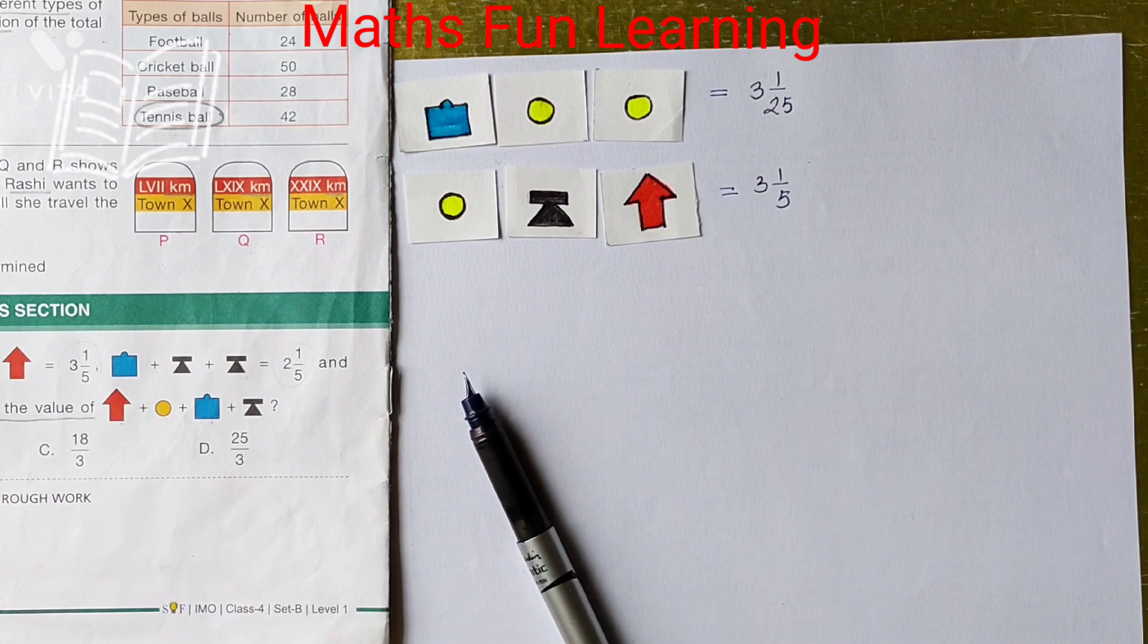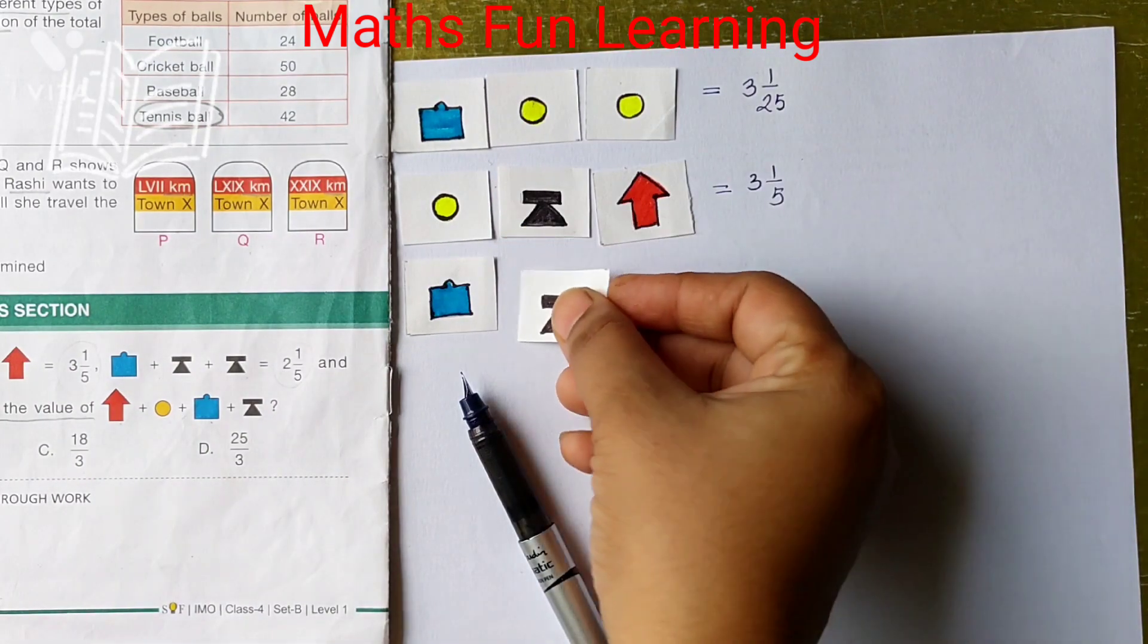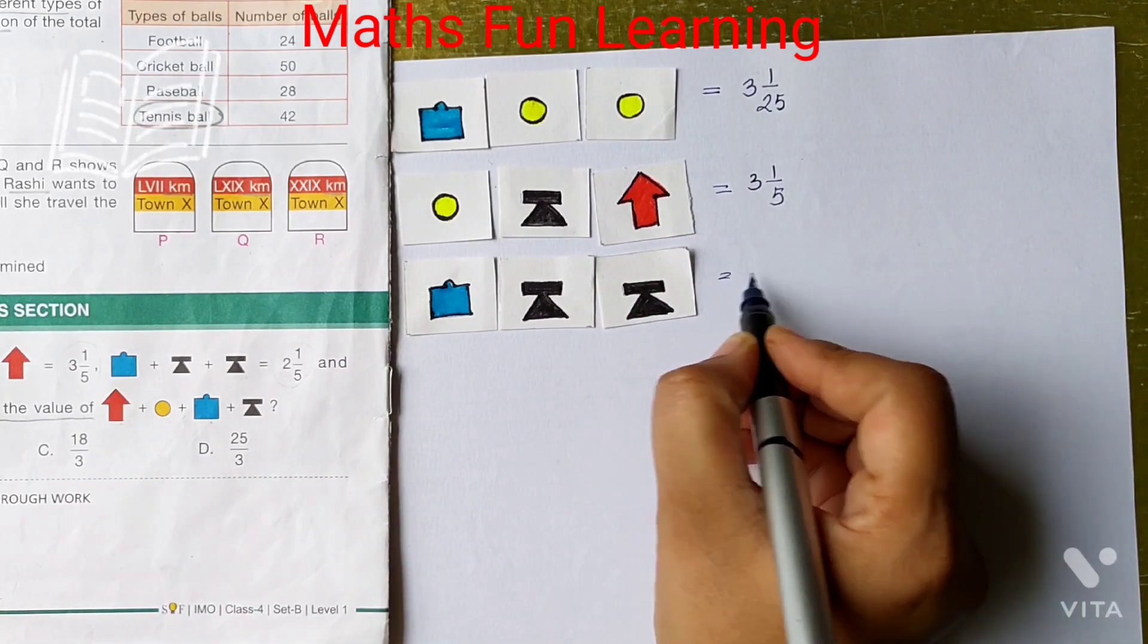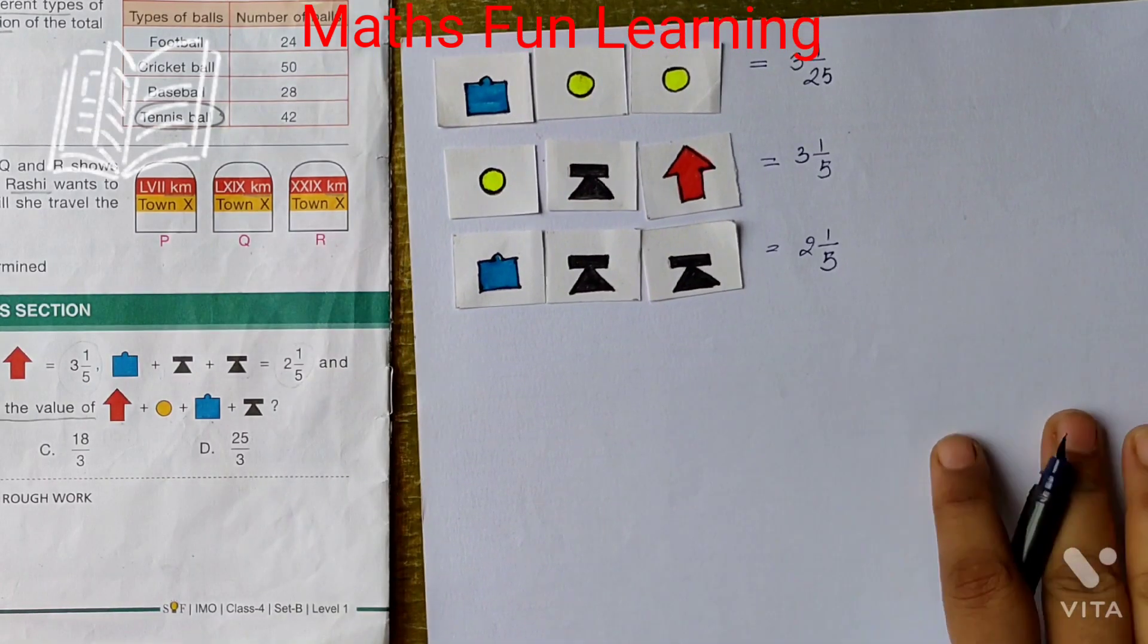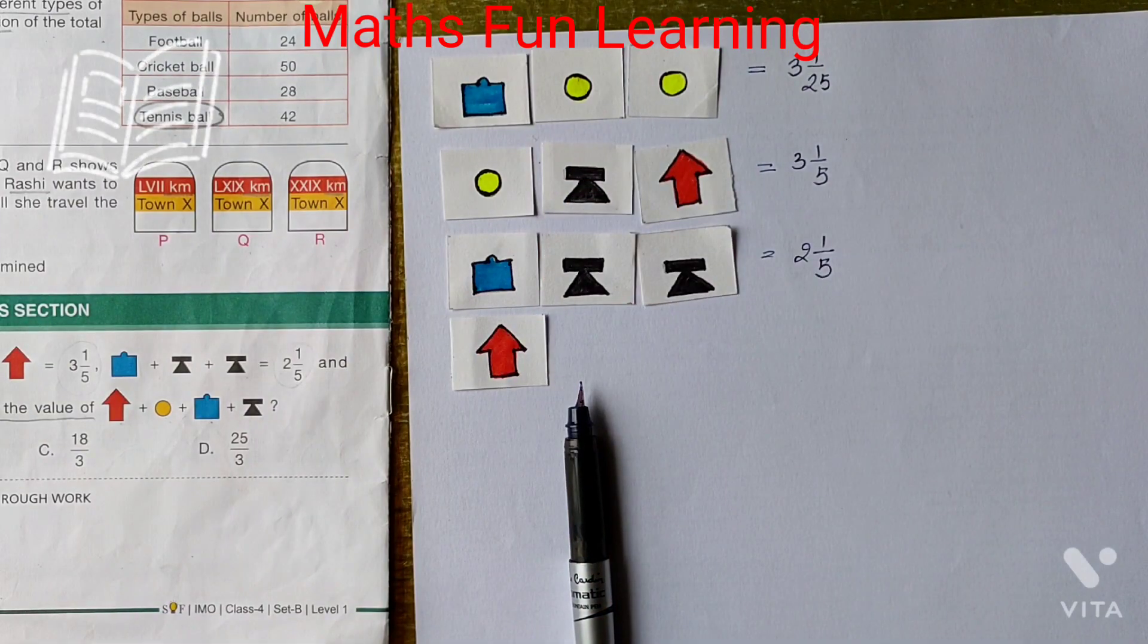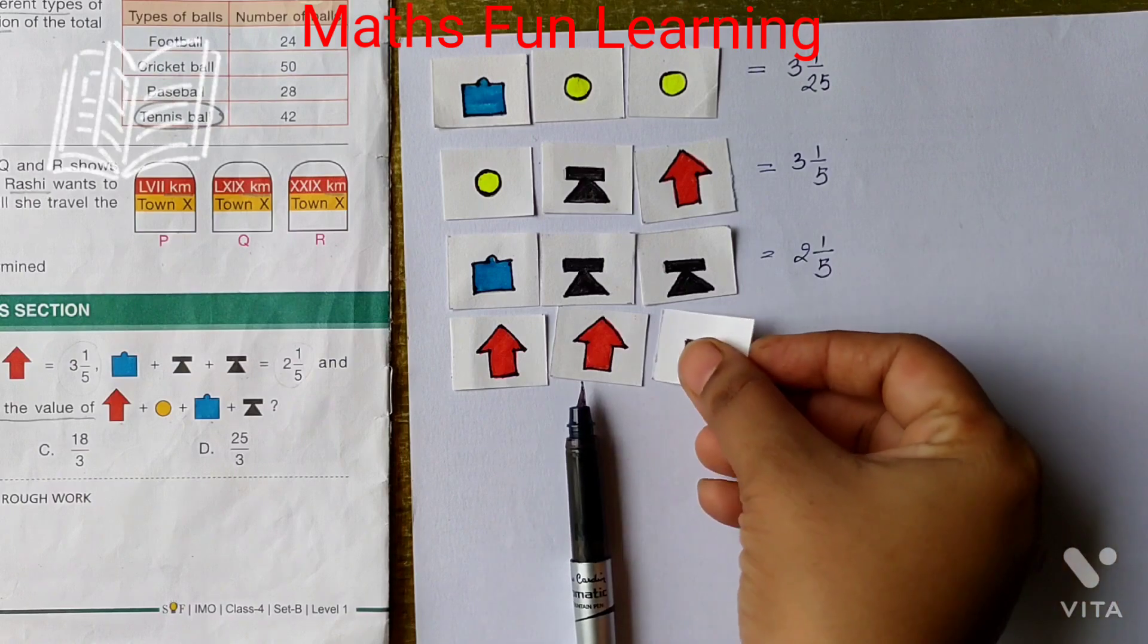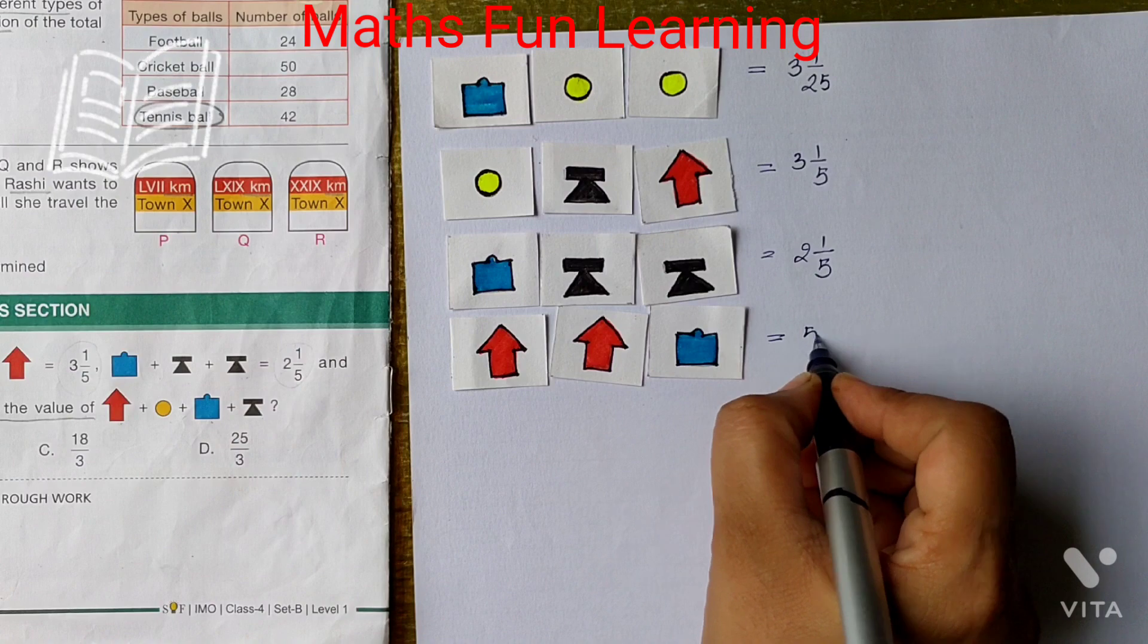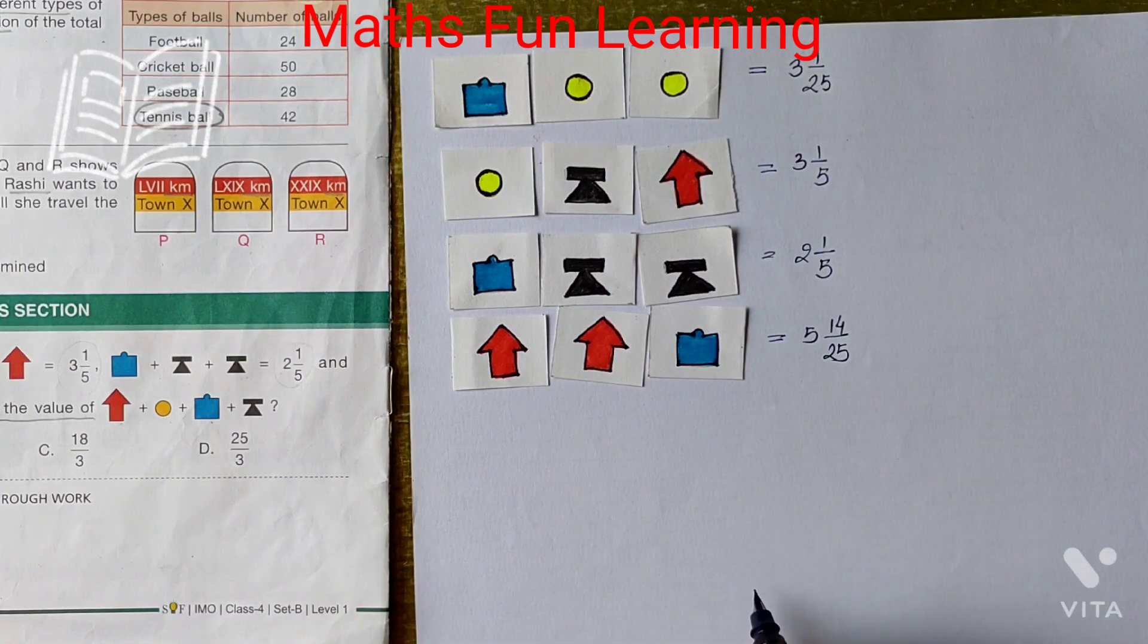Next is blue plus black and black plus another black which gives you 2 and 1 by 5. Next is red plus red plus blue which gives you 5 and 14 by 25.